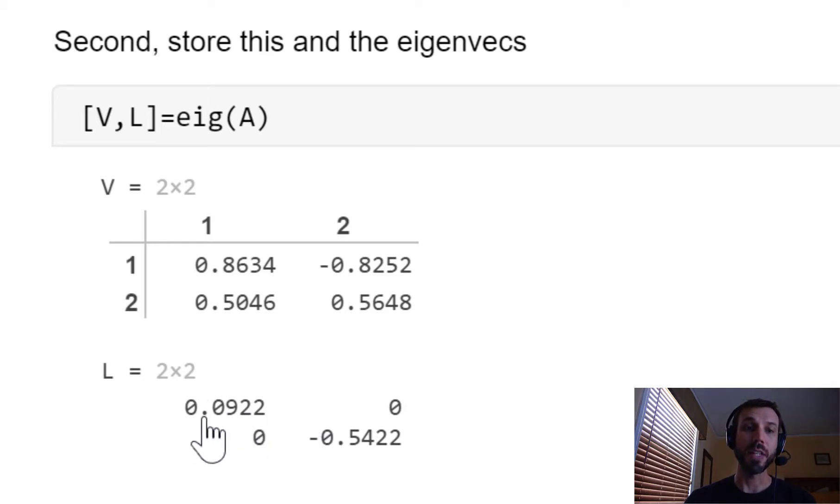The eigenvalues in L, for example the eigenvalue in the one one position, will correspond to the eigenvector in column one of V, and similarly the eigenvalue in the two two position will correspond to the eigenvector in column two of V.